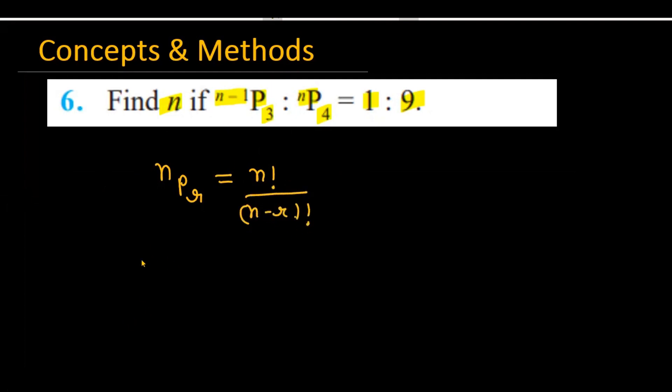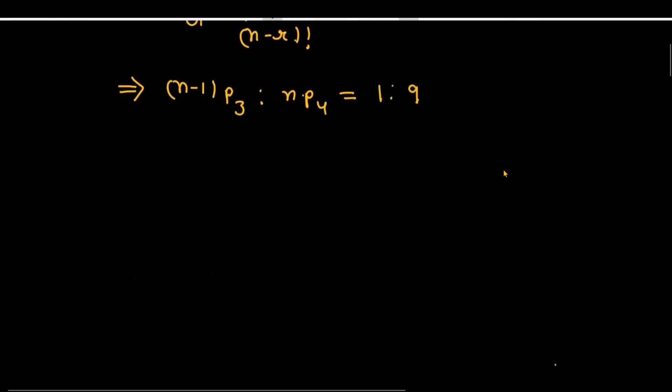Now this is equal to n-1p3 is to np4, and this is equal to 1 is to 9. If you want to write, then this is equal to n-1 factorial divided by n-1-3 factorial. So this is equal to n factorial divided by n-4 factorial.